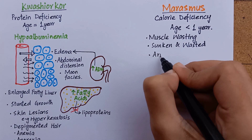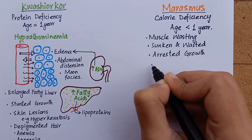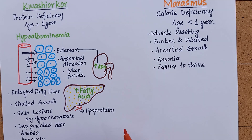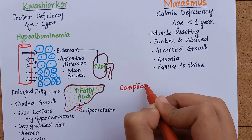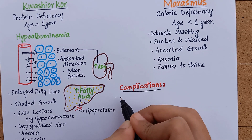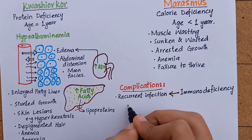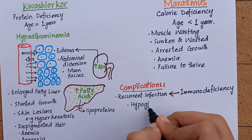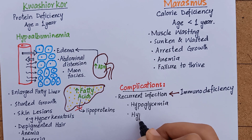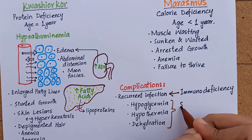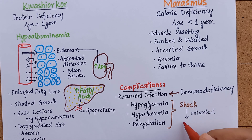Other symptoms of marasmus are arrested growth, anemia, and failure to thrive. The complications of protein energy malnutrition are recurrent infections, which are secondary to immunodeficiency, hypoglycemia, hypothermia, and dehydration — all of which can be caused by severe malnutrition. Persistence of any of these complications can result in shock and, if left untreated, death may occur.